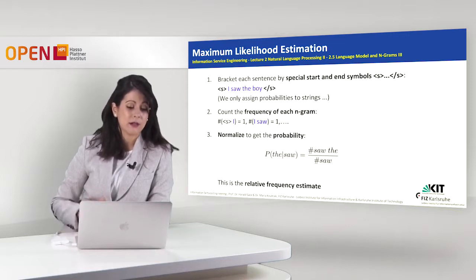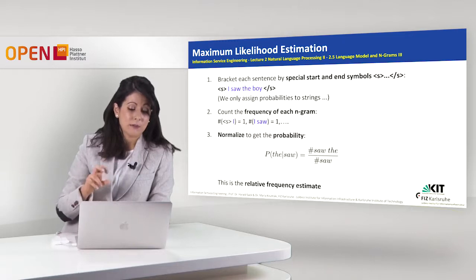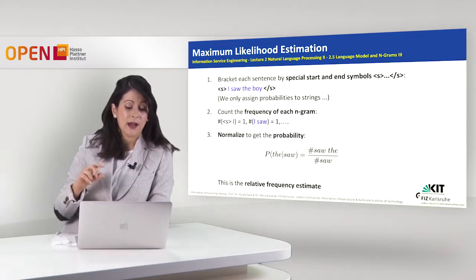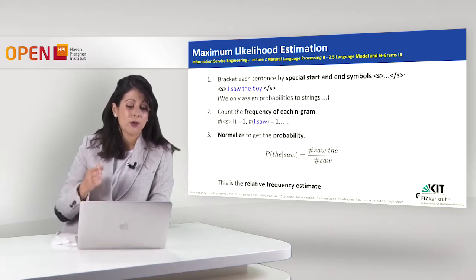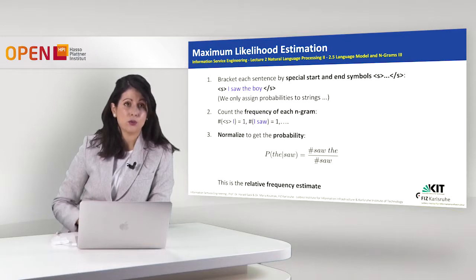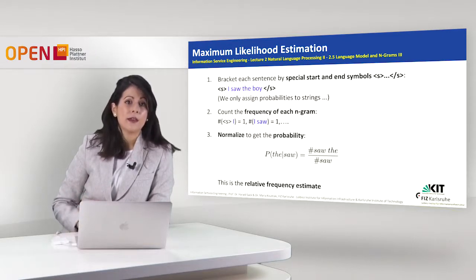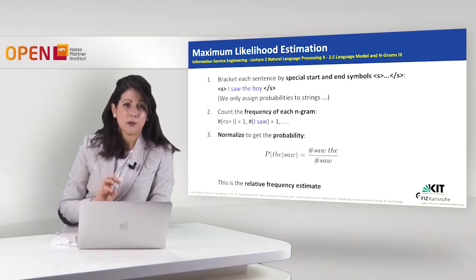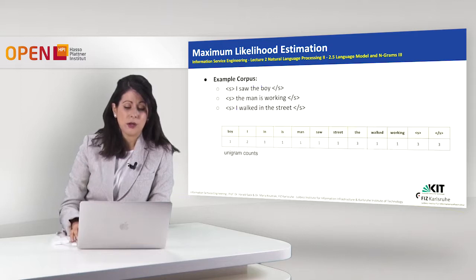You will see here that the bigram of starting S and I appears only once, while the bigram of I and saw again appears only once. Then the step is to normalize to get the probability as we saw — to compute the maximum likelihood estimation, which is called the relative frequency estimate process. But this is the abstract process; let's have a closer look now.